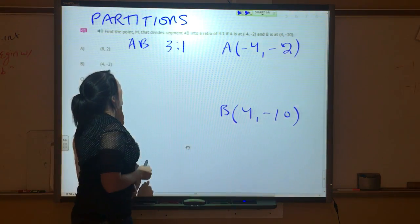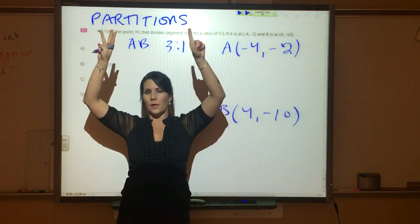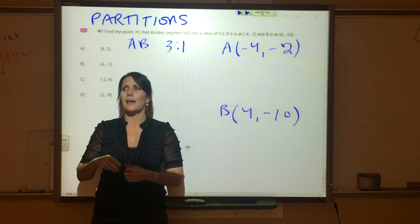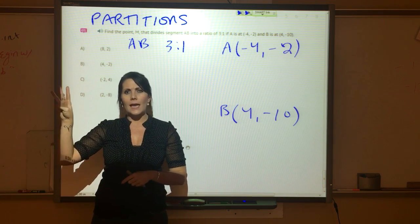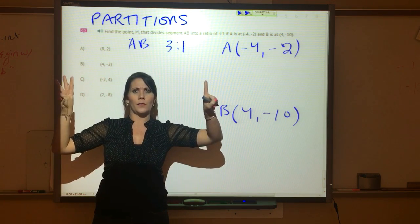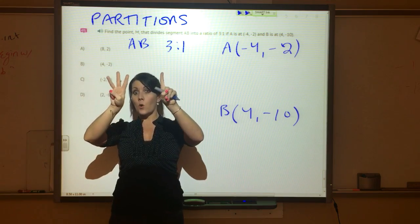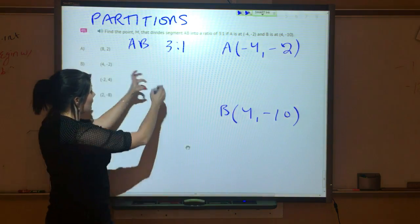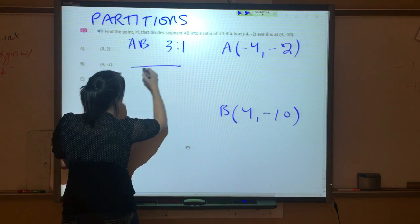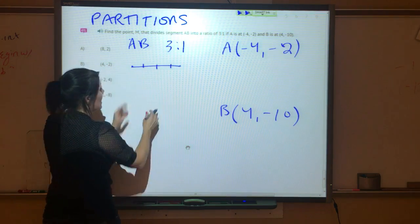This is saying a ratio of 3:1. What that means is, let's just say for every three students I have who have black hair, I have one student with blonde hair. Well, how many students do I have together? Four. So we are actually looking for the point here that divides the segment into four units.